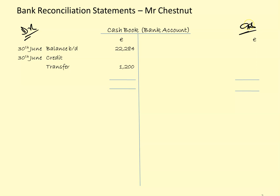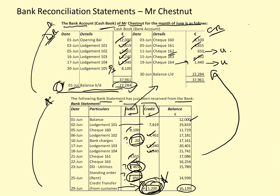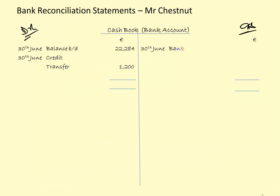On the credit side, there are three items where money has gone out of Mr. Chestnut's account but he hasn't recorded yet. So I'll put those in: bank charges 20 euro, direct debit for utilities 465 euro, and standing order for rent 850 euro. Those are all the items that were missing from Mr. Chestnut's cash book and bank account.